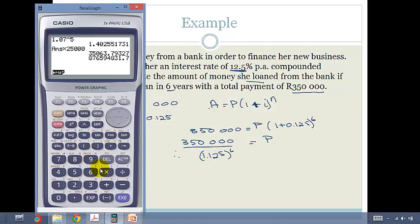We're going to clear it and then go 350,000 divided by bracket 1.125 bracket to the power of 6 equals. So Sam loaned R172,644.